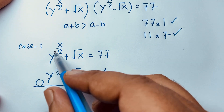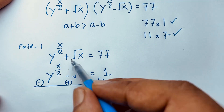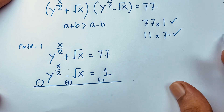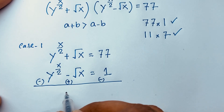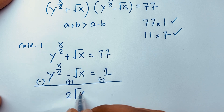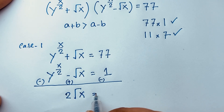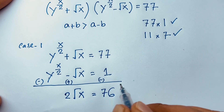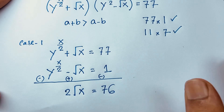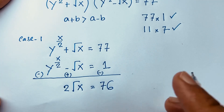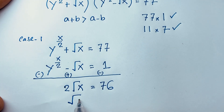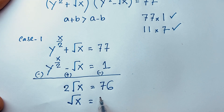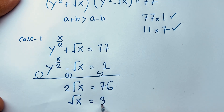Subtracting the two equations, the x over 2 terms cancel out, and we get 2 square root x equals 77 minus 1, which is 76. If I divide both sides by 2, we find that square root x is equal to 38.